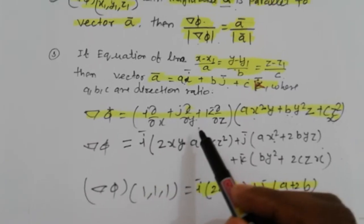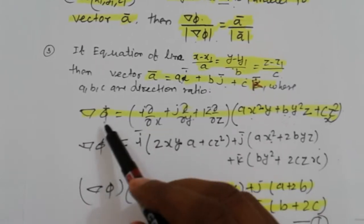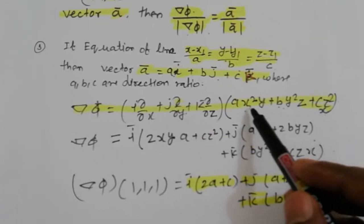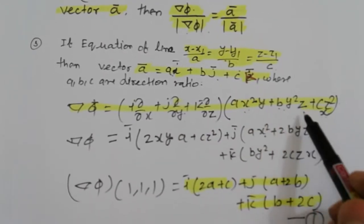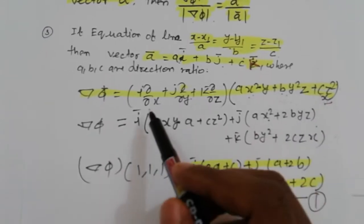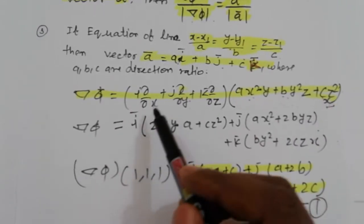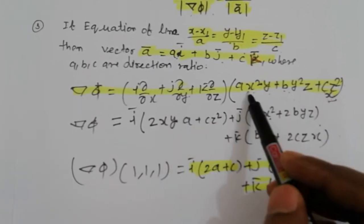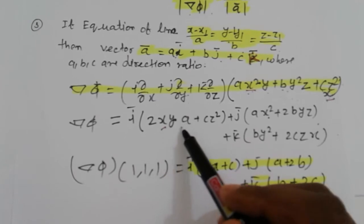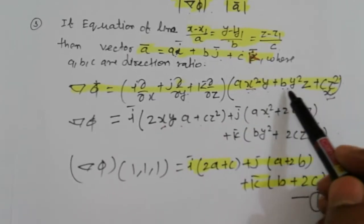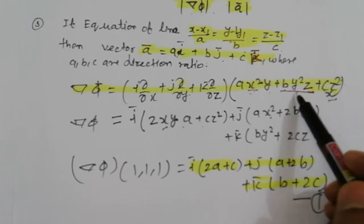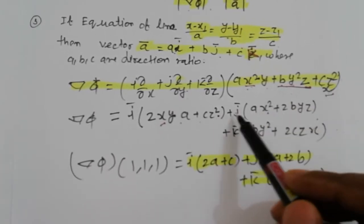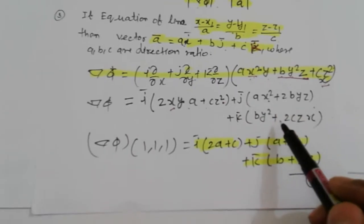Now nabla phi equals i del/del x plus j del/del y plus k del/del z applied to phi = x square y plus b square z plus c z square x. Taking partial derivative with respect to x: 2xy plus c z square. Similarly we get second term and third terms.